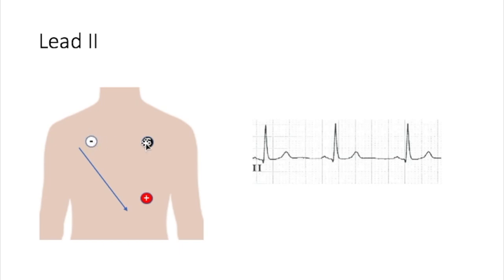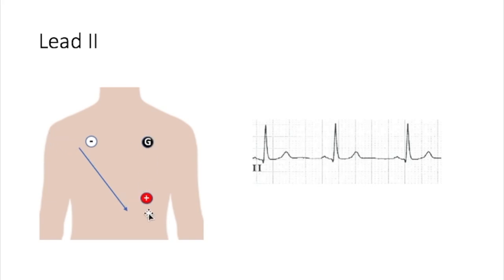In the three lead system, one lead is a negative, one is a positive, and one is a ground. For example, the white could be negative, the black is positive, and the red is the ground — looking at electricity moving right to left. Or the black could be negative, the red is positive, and the white is the ground — looking at movement from the left arm down towards the left leg. Essentially for lead two: white is negative, red is positive, and black is the ground. Electricity travels from the SA node to the AV node to the Purkinje fibers in the same direction as our lead two.